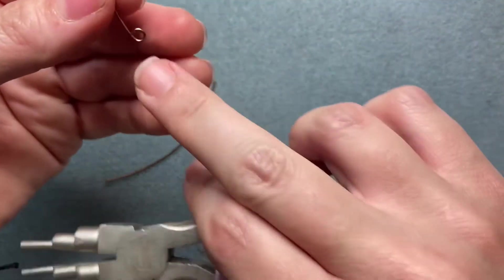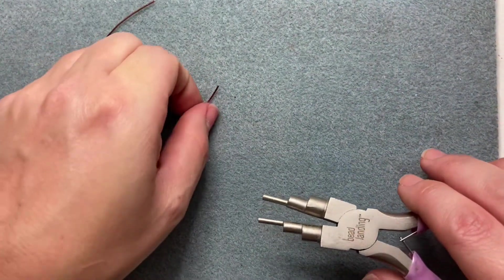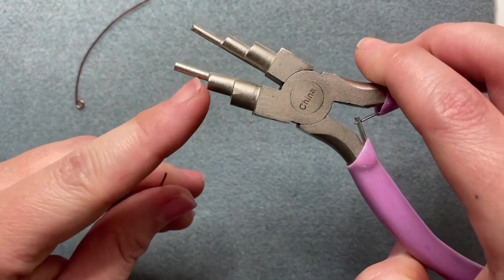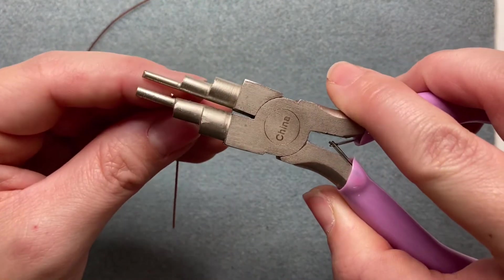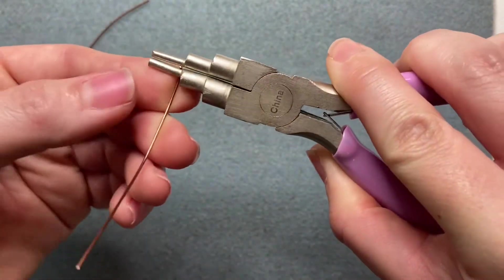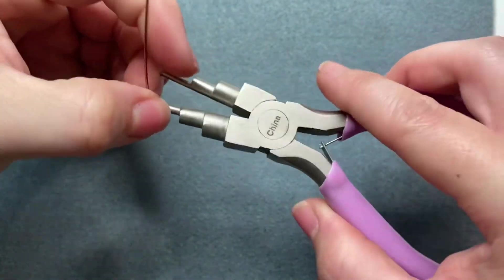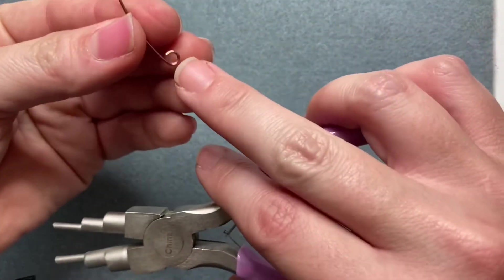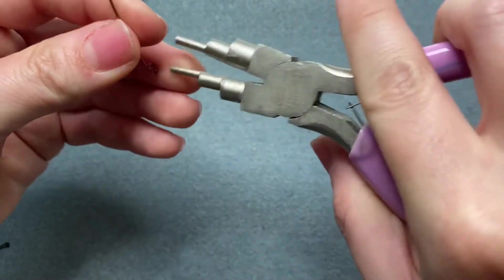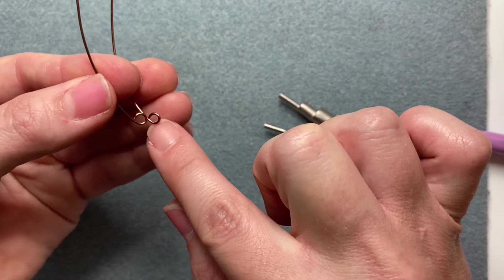I'm going to do the same thing on the other side. Choose either end and again I want the side, the larger side facing me. Place your wire like so and create that circle by simply pushing the wire. Again, it's going to create a gap so I'm going to want to close that like so.